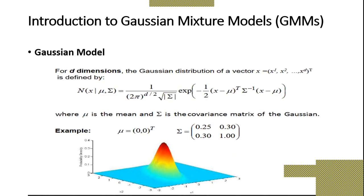This is the basic formula for the Gaussian model. For dimension d, the Gaussian distribution of vector x equals x raised to 1, x raised to 2, through x raised to d, is defined by N of x, mu, sigma equal to 1 divided by (2 pi) to the d over 2, times the determinant of sigma to the 1/2, times exponential of negative one-half (x minus mu) transposed, sigma inverse, (x minus mu).